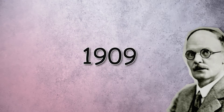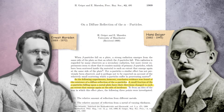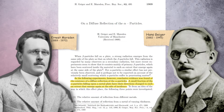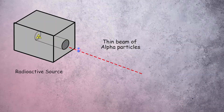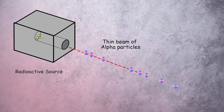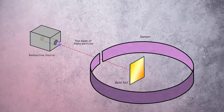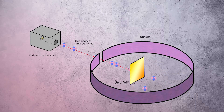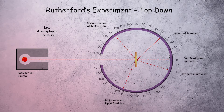From 1909, Geiger and Marsden performed a series of important experiments. They involved firing a beam of positively charged alpha particles towards a very thin piece of metallic foil to see whether any particles scattered backwards. Most of the alpha particles went straight through without changing course; however, a few deflected through large angles, and some did in fact rebound backwards.